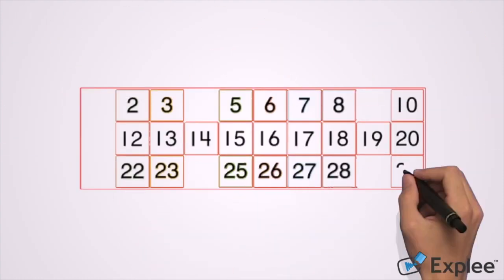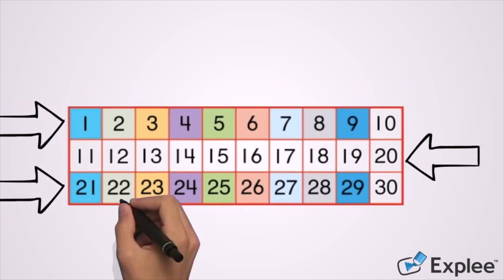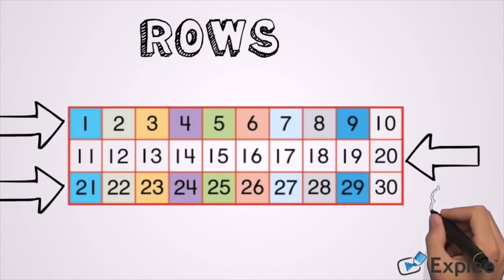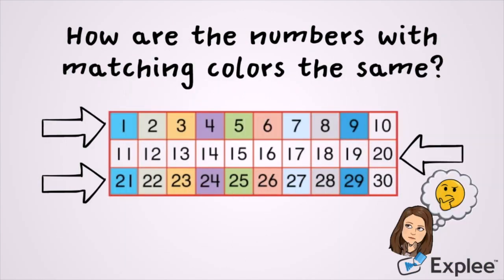Let's take a look at a number line going up to 30. In a number line, the parts going from left to right are called rows. Look at these rows. How are the numbers with matching colors the same? For example, look at the numbers 1 and 21. What is the same about those numbers?